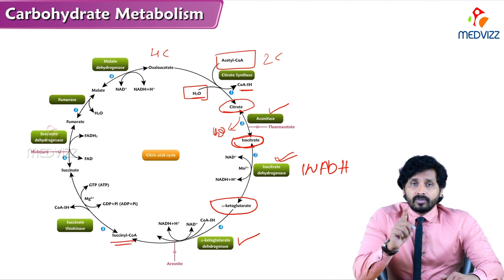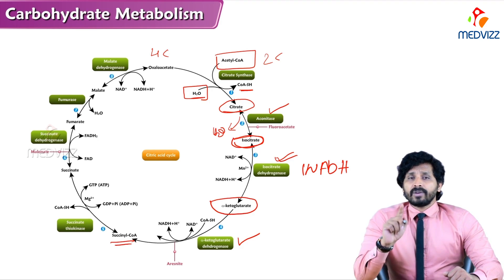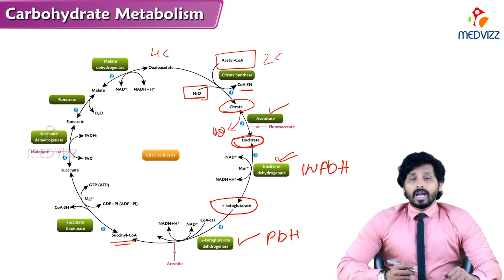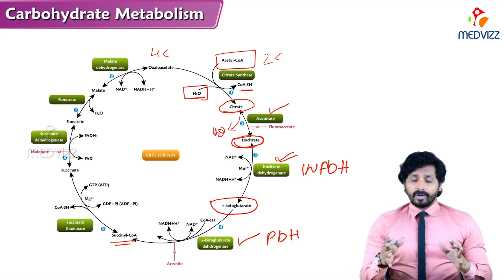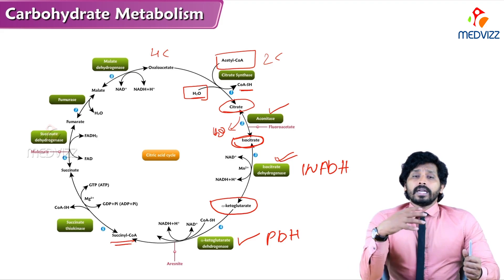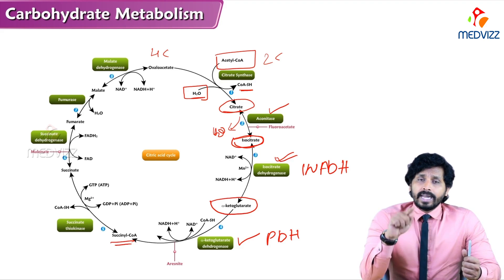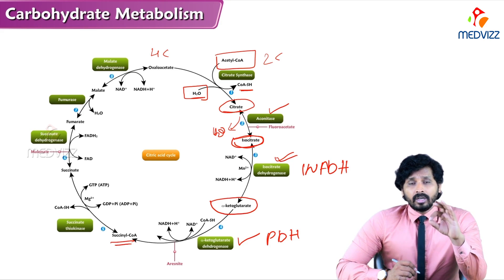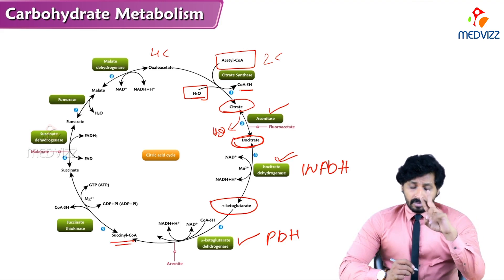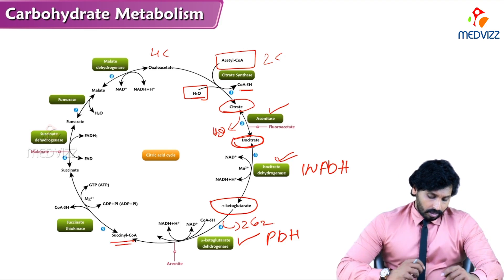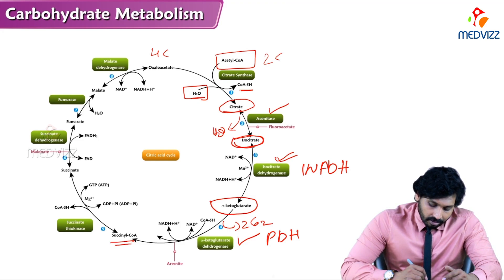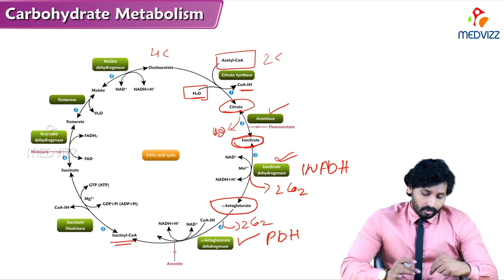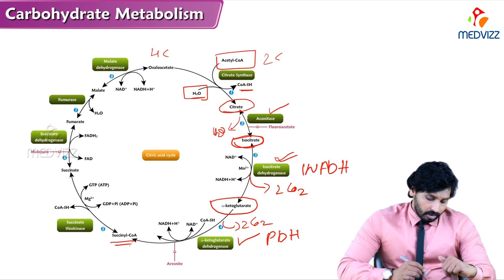Alpha-ketoglutarate undergoes sequential rearrangements to form succinyl-CoA by the enzyme alpha-ketoglutarate dehydrogenase, which is similar to pyruvate dehydrogenase. It is a multi-enzyme complex requiring 5 coenzymes: TPP, FAD, NAD, CoA, and lipoic acid. In this reaction and the isocitrate dehydrogenase reaction, 2 carbon dioxide molecules are removed each time — so from isocitrate to alpha-ketoglutarate, 2 carbons are removed, and again from alpha-ketoglutarate to succinyl-CoA, 2 more carbons are removed, totaling 6 carbons sequentially removed from glucose.